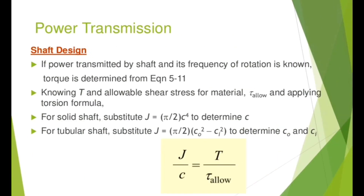Shaft design: if the power transmitted by a shaft and its frequency of rotation are known, torque is determined from the power equation. Knowing T and the allowable shear stress for the material, apply the torsional formula. For a solid shaft, substitute j = (pi/2)*c^4 to find c. For a tubular shaft, substitute j = (pi/2)*(c_o^2 - c_i^2) to find c_o and c_i. Use j/c = T / allowable stress.